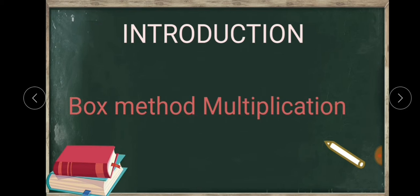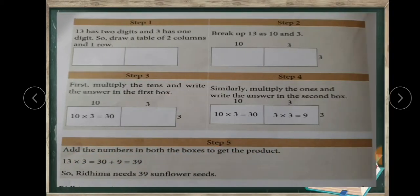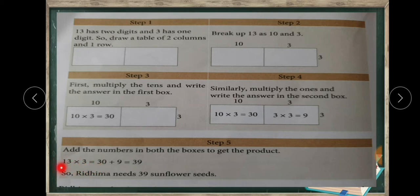Let's see — here we have a question: 13 into 3, or find the product of 13 and 3. Now let's check how we find the product, or how we multiply these two numbers. The given multiplication is 13 into 3.